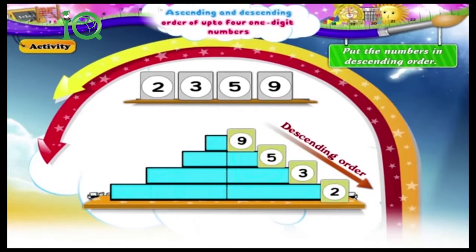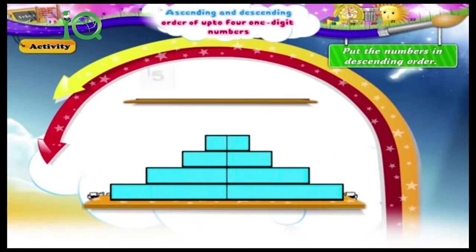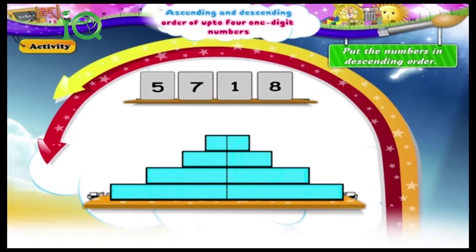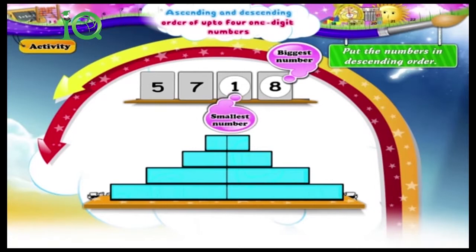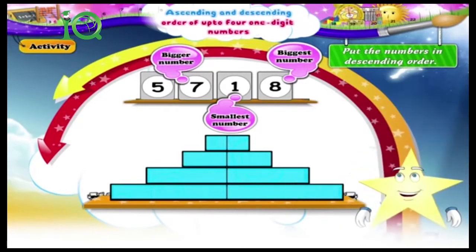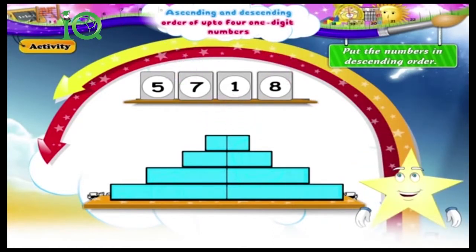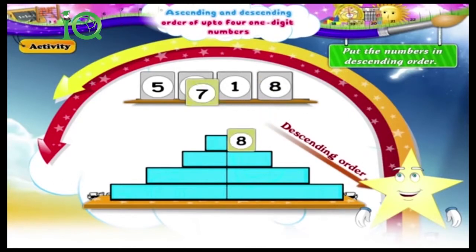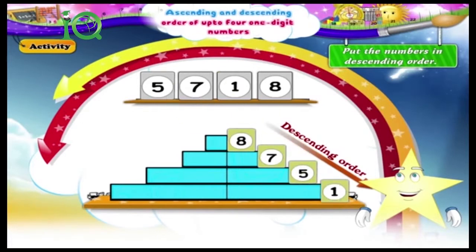The next set of numbers is five, seven, one, eight. The biggest number is eight. The smallest number is one. Between five and seven, seven is the bigger number. The numbers arranged in descending order are eight, seven, five, one.